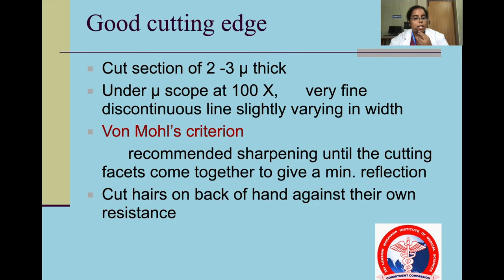A good cutting edge cuts sections of 2 to 3 microns under microscope at 100x, showing a very fine discontinuous line slightly varying in width. The worn moles criterion recommends sharpening until the cutting facets come together to give a minimum reflection; a check is to cut hairs on the back of the hand against worn resistance.